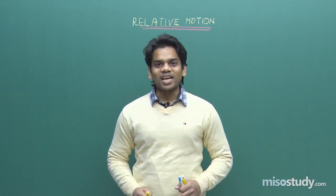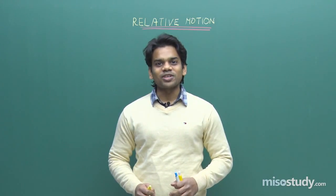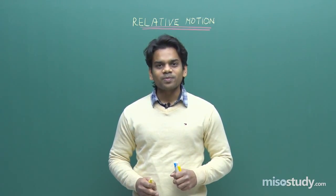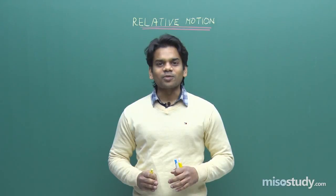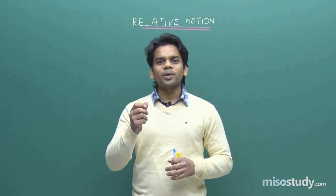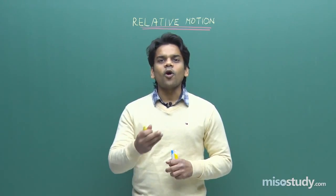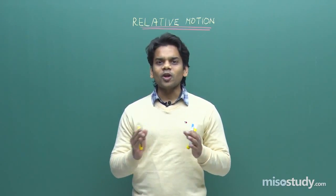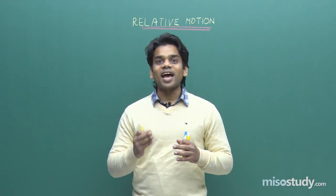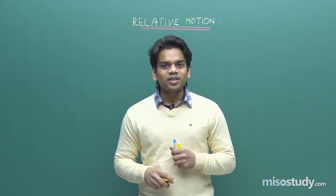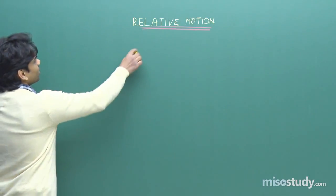Hello students, welcome to the class once again. Last class we started with relative motion and understood the river flow problem. Today we'll go ahead and see the rain-man problem. Normally when you're standing on the ground and rain is falling, you hold the umbrella in the direction of rain. But suppose you are walking or running, you need not hold the umbrella in the same direction — you have to change your direction.